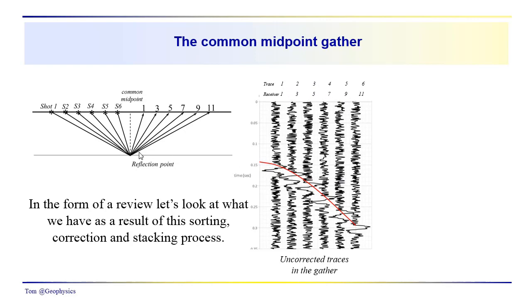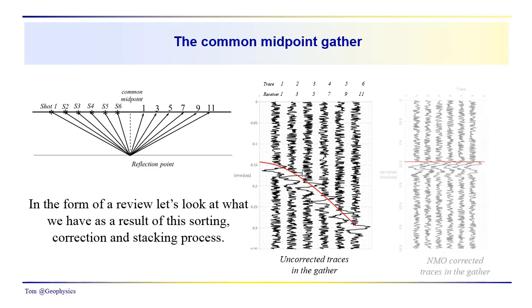We can see, as we noted earlier on, that the time distance relationship for the reflection event in a gather is basically like that in a shot record, it's hyperbolic. These are the uncorrected traces, and then these are the corrected traces.